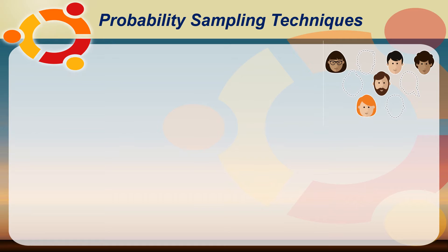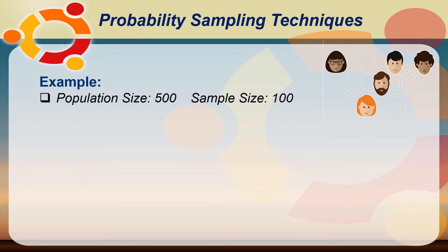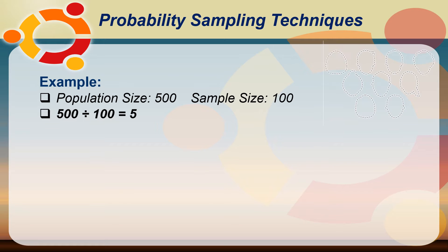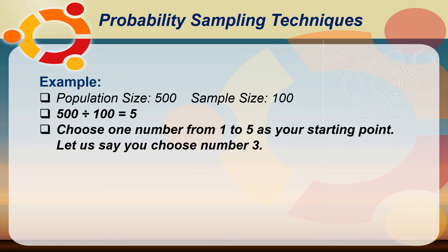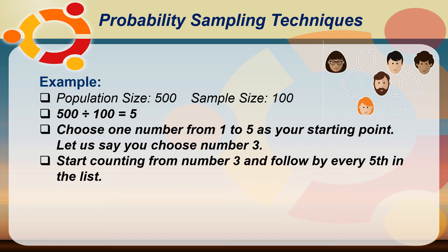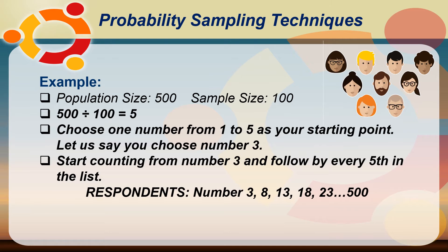For example, the population size is 500 and the sample size is 100. Using systematic sampling, divide 500 by 100, which equals 5 — meaning the interval will be every fifth person on the list. For step 4, since the interval is 5, choose one number from 1 to 5 as the starting point. Let us say you choose number 3. Then start counting from number 3 and continue by every fifth on the list. Therefore, the respondents will be the students listed as numbers 3, 8, 13, 18, 23, and so on until it reaches 500.